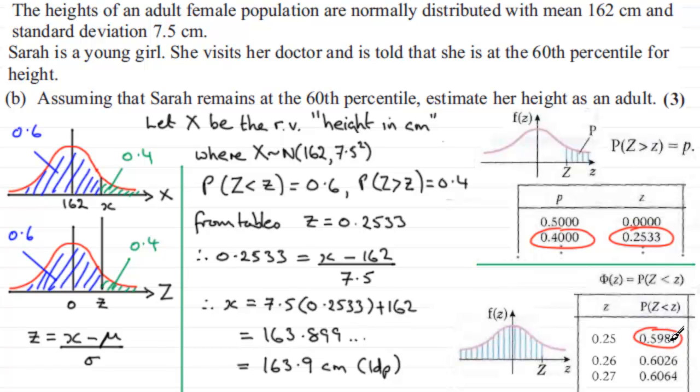So that means that z is 0.25. And you can see how it compares with this value of z, 0.2533.